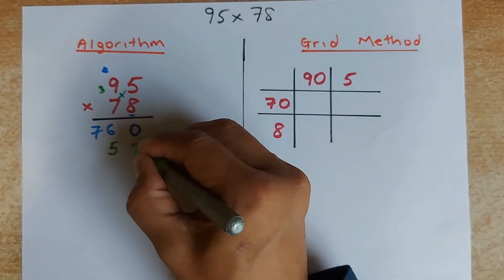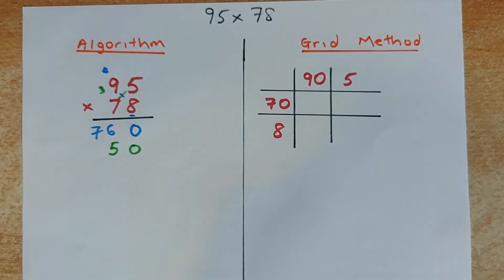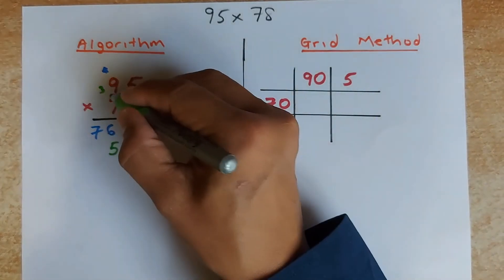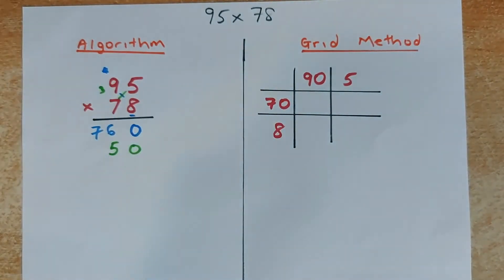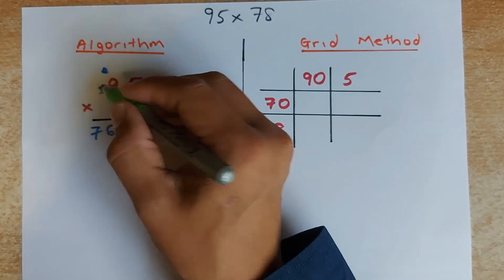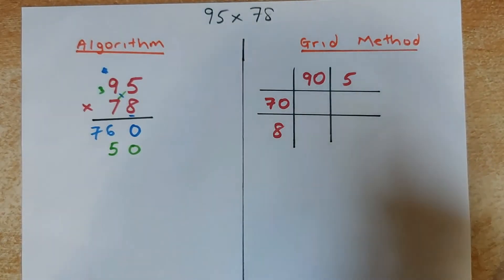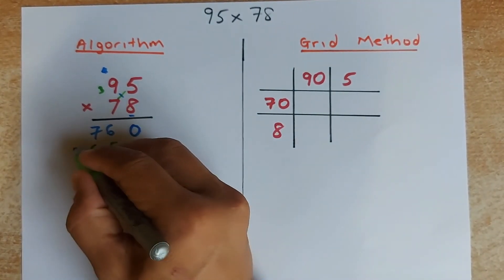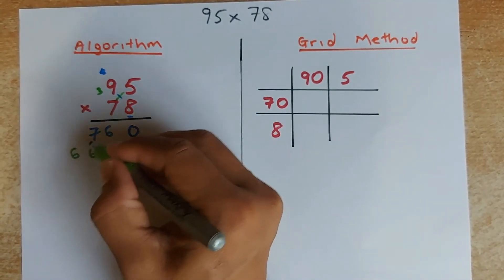You still have to put a 0 there because there is nothing there. So next number, you are going to multiply 9 times 7. 9 times 7 is 63, and there is a 3 there. 63 plus 3 is going to be 66. So you are going to put 6 and 6.